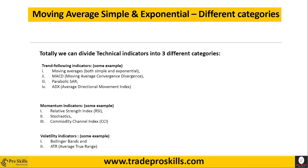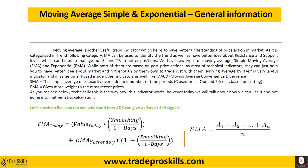As I mentioned, we have three different categories of technical indicators: trend-following indicators like MACD, ADX, and moving average, which we're going to talk about today; momentum indicators; and volatility indicators. Moving average is a trend-following indicator that traders use to find where the trend is — whether it's an uptrend or downtrend.